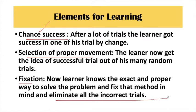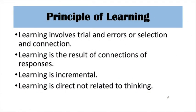Next, on this basis Thorndike gave some principles. The first principle is that learning involves trial and error, selection and connection. When we perform any learning process with any problem or task, different trials and errors are involved. We try many things to solve the problem, and there are many errors — the first try is not necessarily successful.